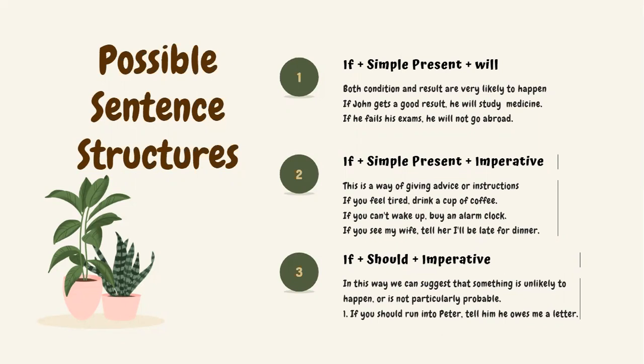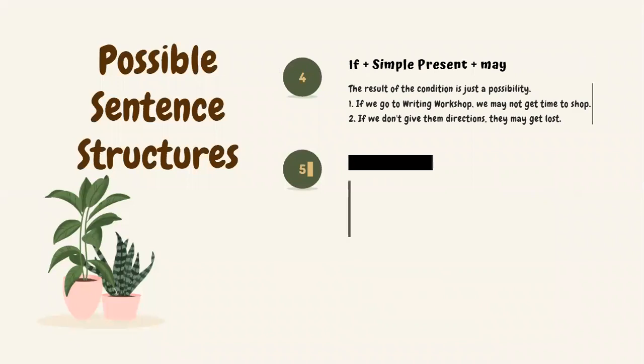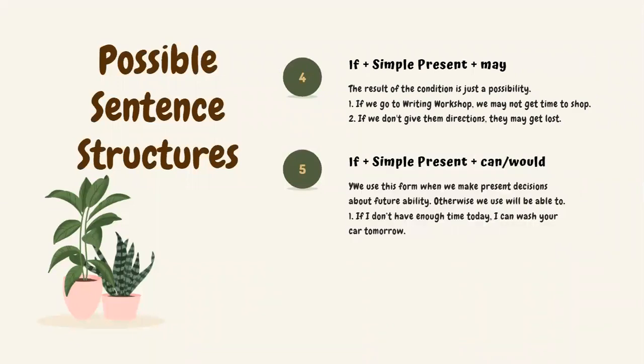Third structure: if plus 'should' plus imperative. This is used to suggest that something is unlikely or not particularly probable. For example: 'If you should run into Peter, tell him he owes me a letter.'